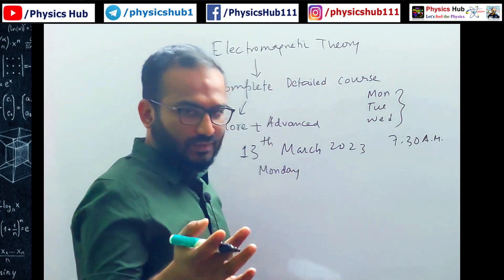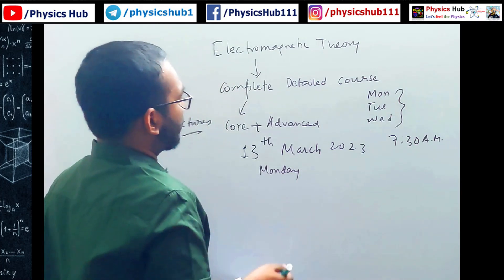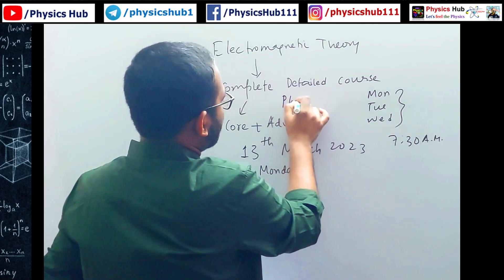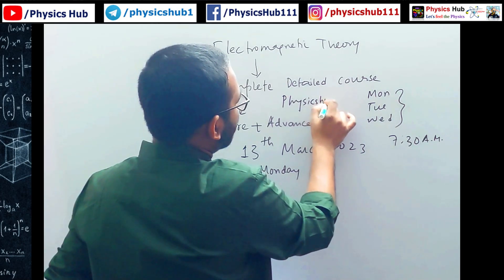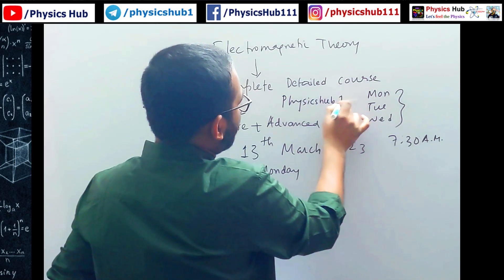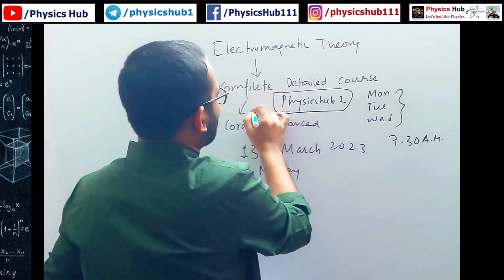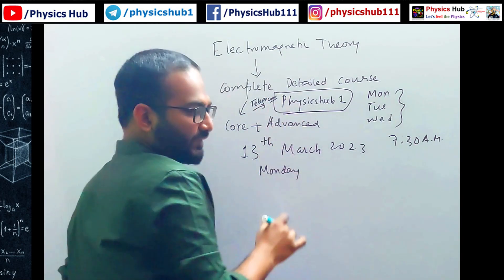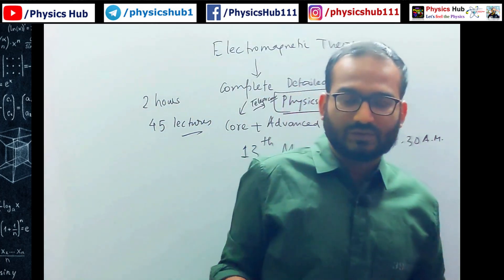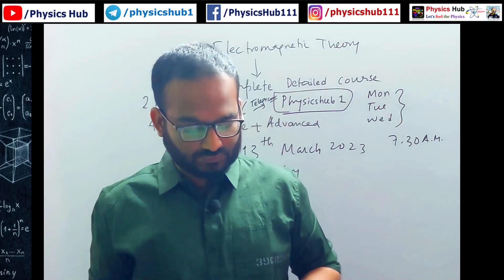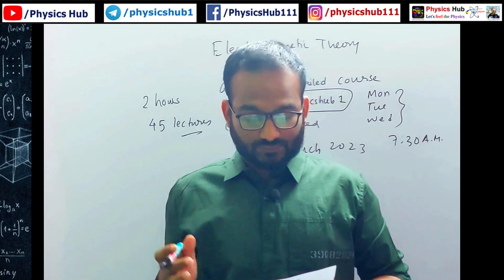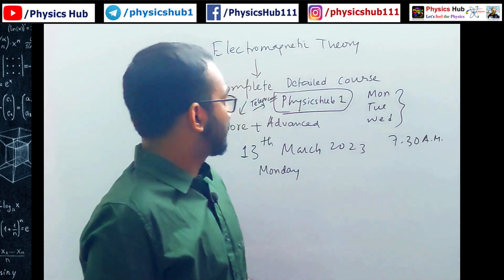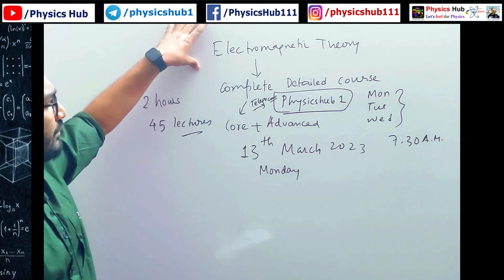So you can join our Telegram group. The Telegram group ID is PHYSICSHUB1. You can search it in your Telegram with this ID, PHYSICSHUB1, then you will get our Telegram group. You can join the Telegram group and you can get all the assignments. The assignments will also be shared on our Facebook page and WhatsApp group also.